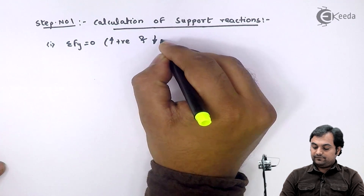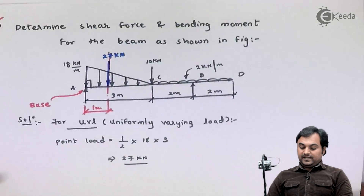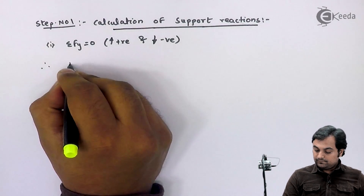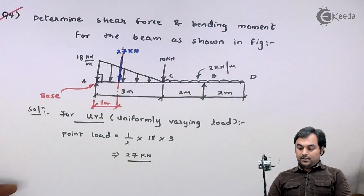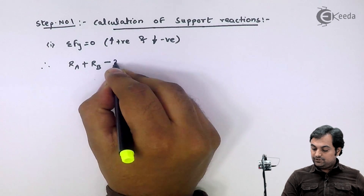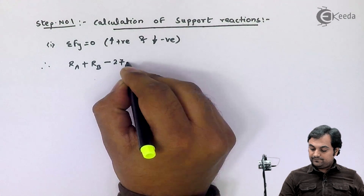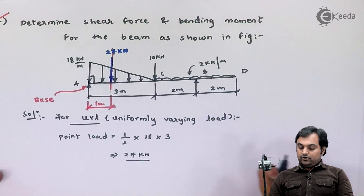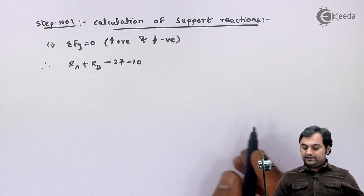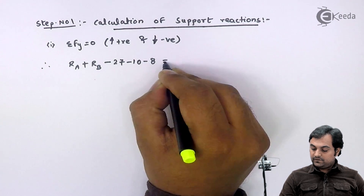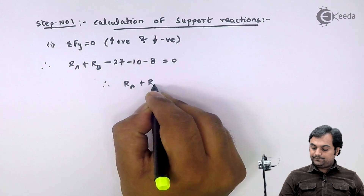For the summation of forces in the Y-direction equal to zero, with upward forces positive and downward forces negative: R_A plus R_B minus 27 (the UVL point load) minus 10 kilonewton minus 8 (which is 2 times 4, the UDL contribution) equals zero. Therefore R_A plus R_B equals 45 kilonewton. This is equation number one.